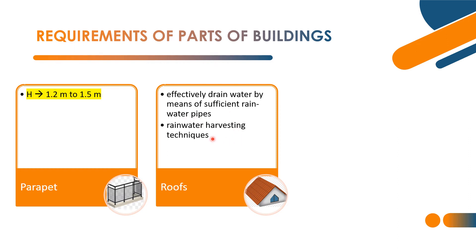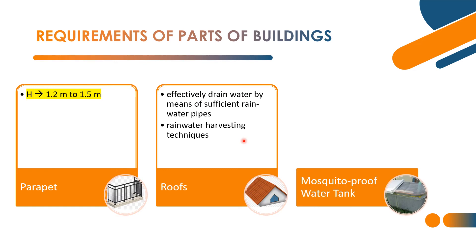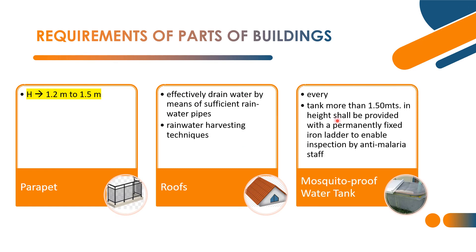So this is the recommendation for rainwater harvesting and draining of rainwater. Next: mosquito-proof water tank. In every tank more than 1.5 meters in height, a permanently fixed iron ladder shall be provided to enable inspection by anti-malaria staff. This is the criteria for mosquito-proof water tanks.